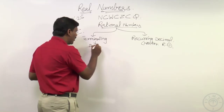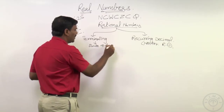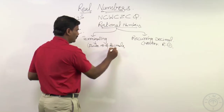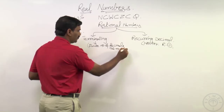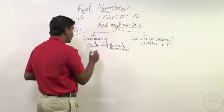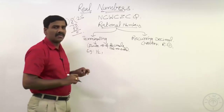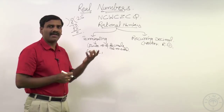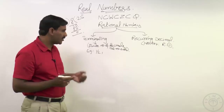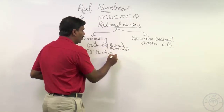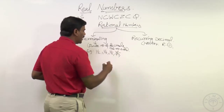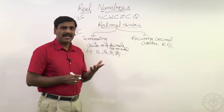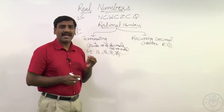Examples of terminating decimals: one by two, one by four, one by five, three by five — these are all terminating decimals. If we have a repeating part occurring continuously, we call it a recurring or repeating decimal. For one by two: ten divided by two gives five with zero remainder, so it terminates. But if there is a part that keeps repeating without end, that is a recurring decimal.